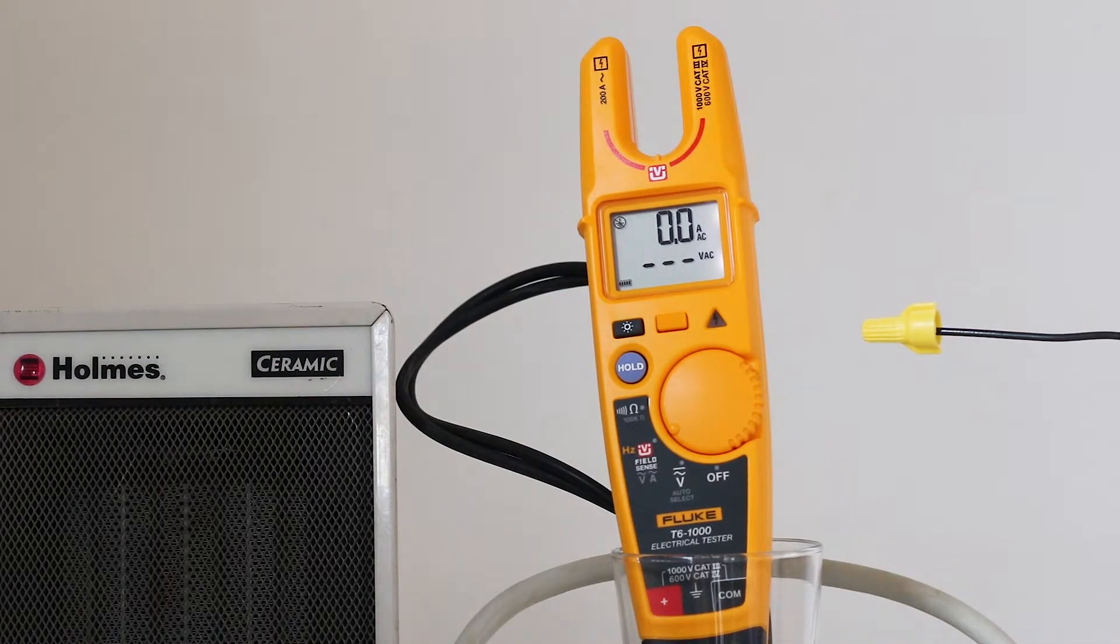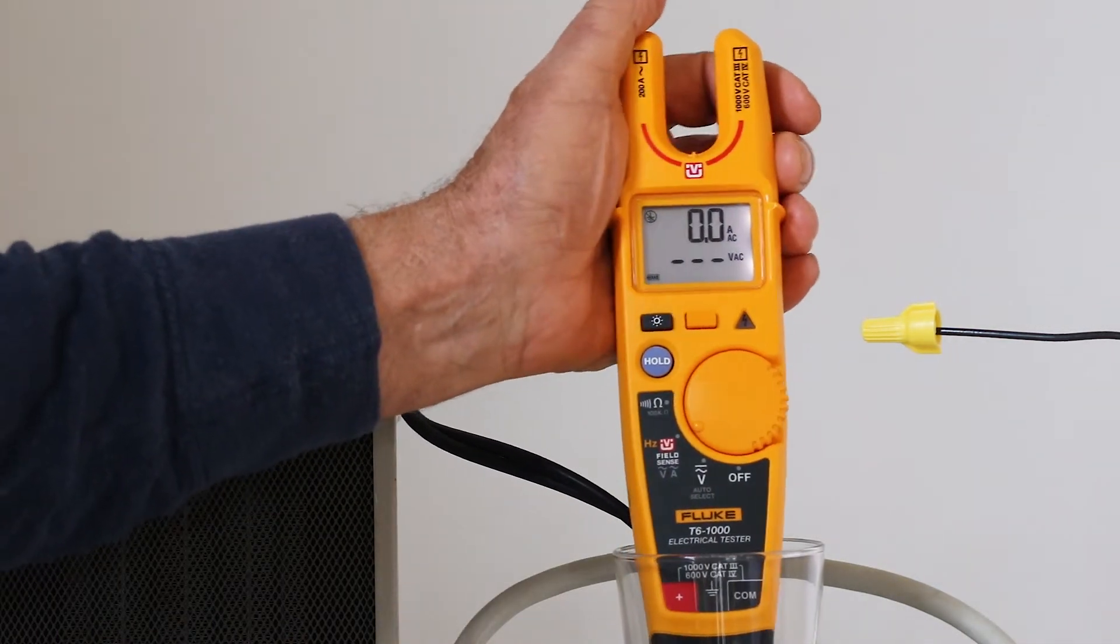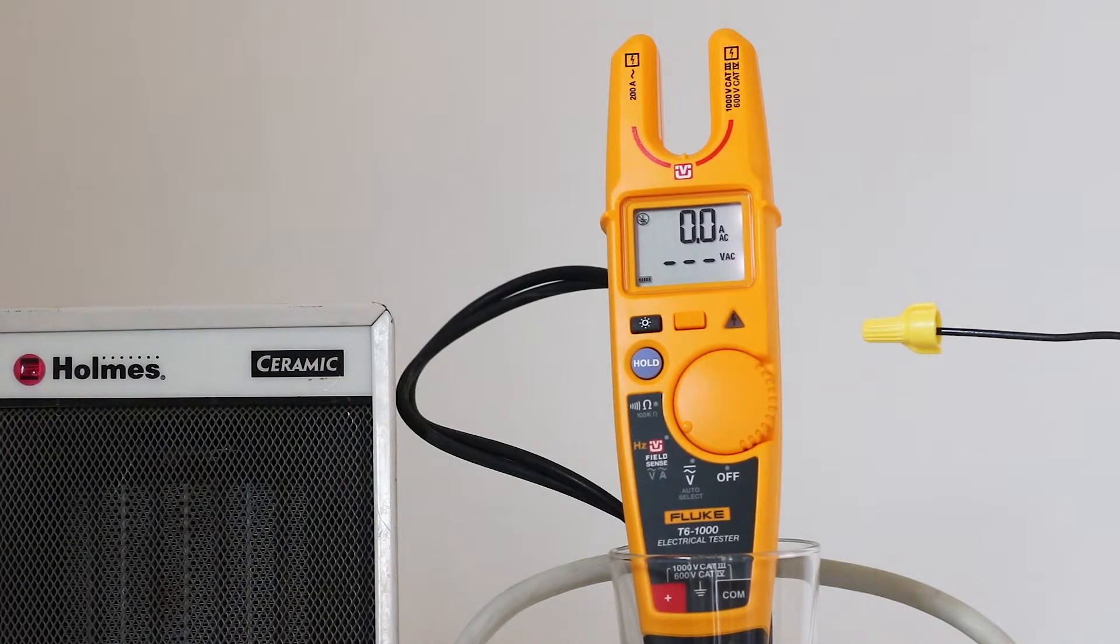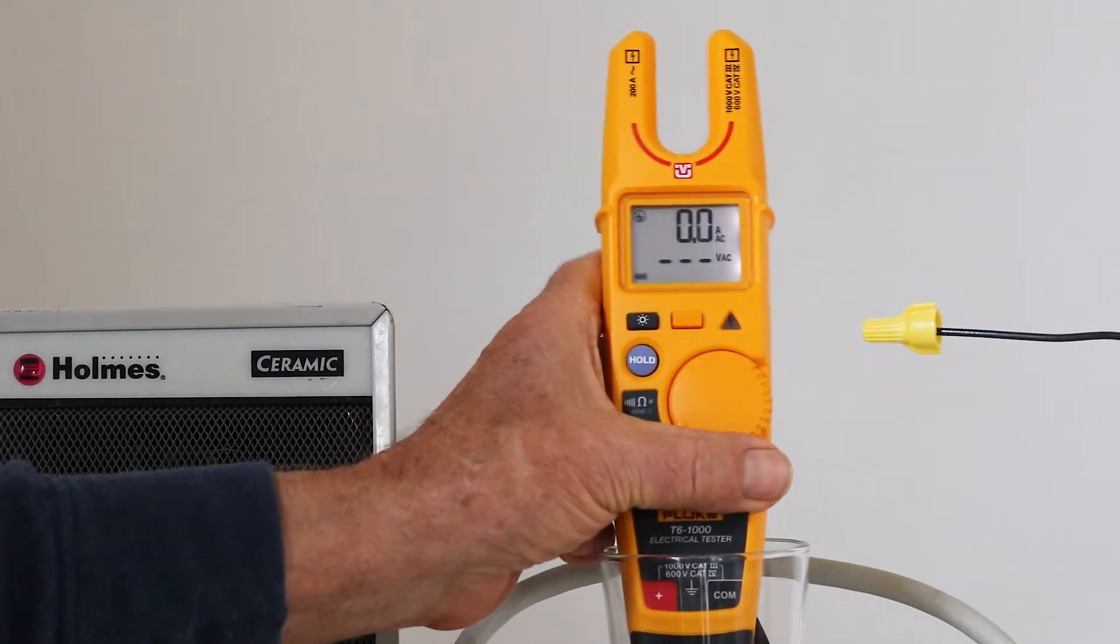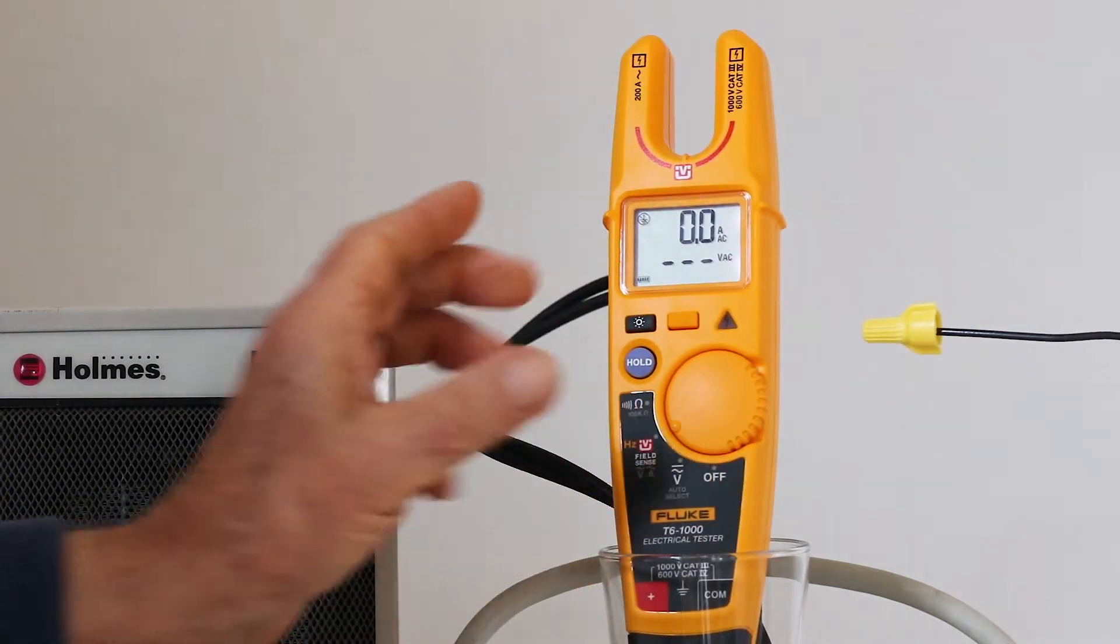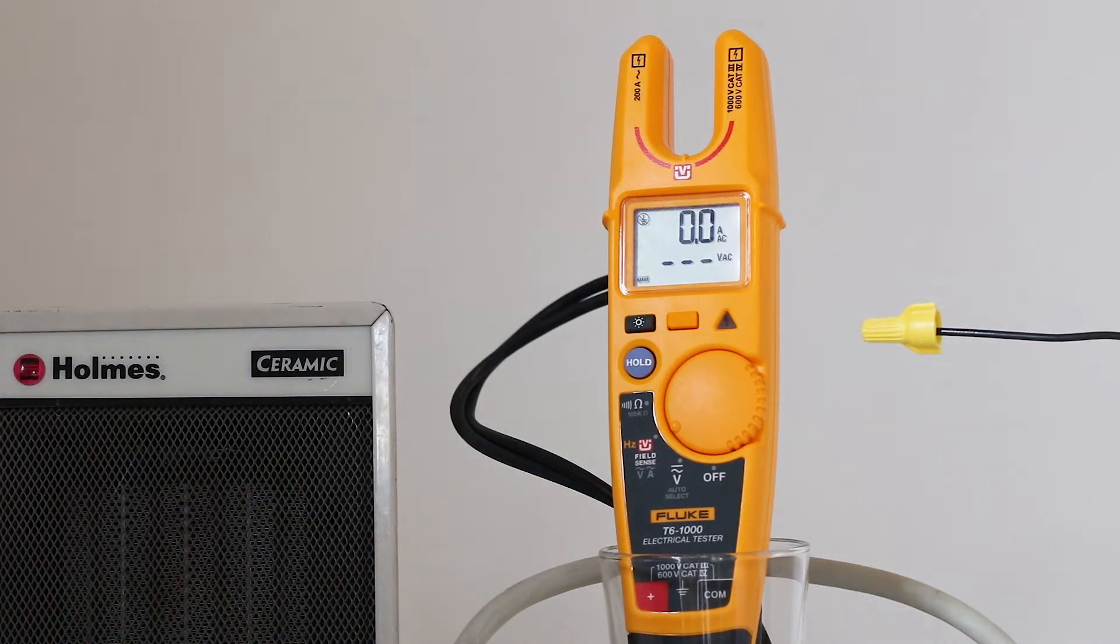The Fluke T6-1000 electrical tester resembles a clamp-on ammeter, but actually it operates quite differently. The clamp-on ammeter performs current readings by detecting a magnetic field surrounding a conductor through which the current is flowing. Of necessity, the jaws close around the conductor so that current can flow through the instrument's secondary coil. The T6-1000, in contrast, capacitively senses the electrical field surrounding an energized wire, even though there is no load and no current flowing.